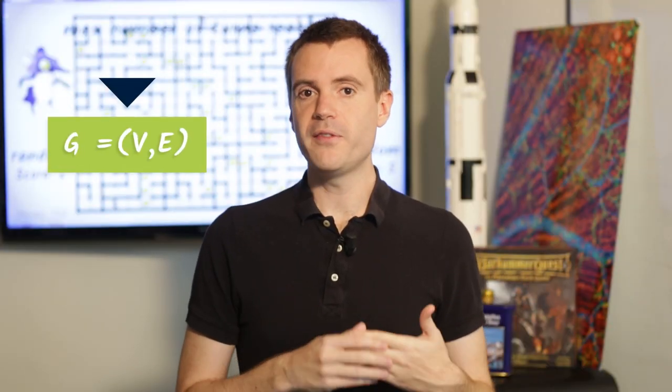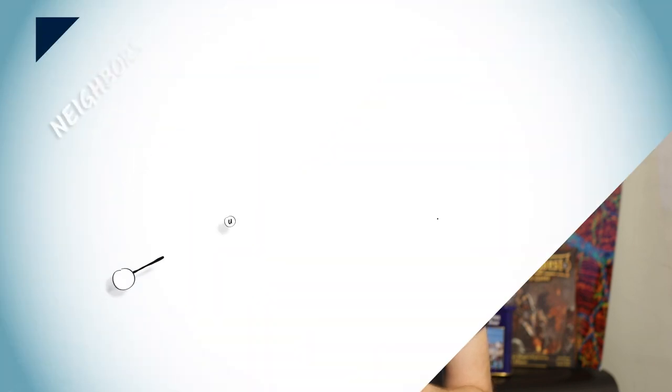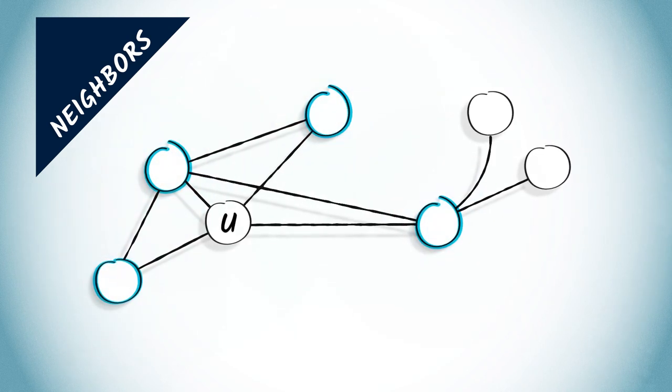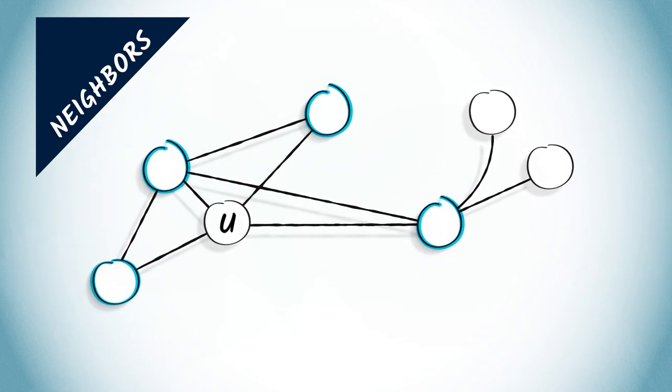Recall that a graph is a couple G, composed of a set of vertices V and a set of edges E. Now, we need to define a few more things. We define the neighbors of u in G as a set of vertices v such that uv is in E.